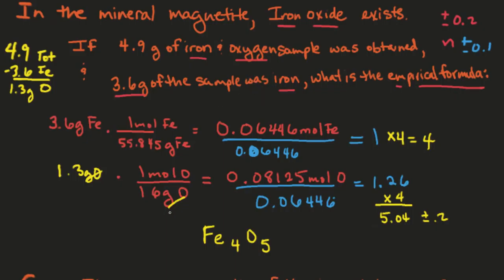So the main point is if your number when you divide does not fall within that plus or minus range, then you're going to have to multiply by a whole number until it does fall within that range. And then whatever whole number you multiply this one by, you multiply all the other subscripts by.